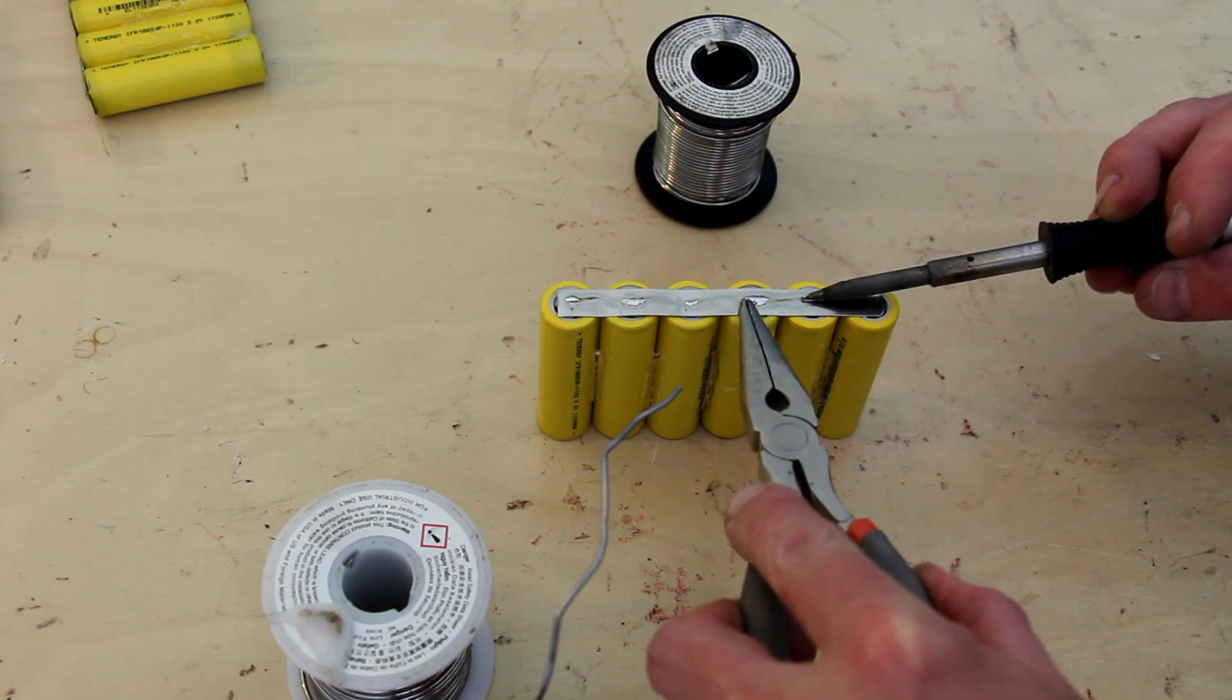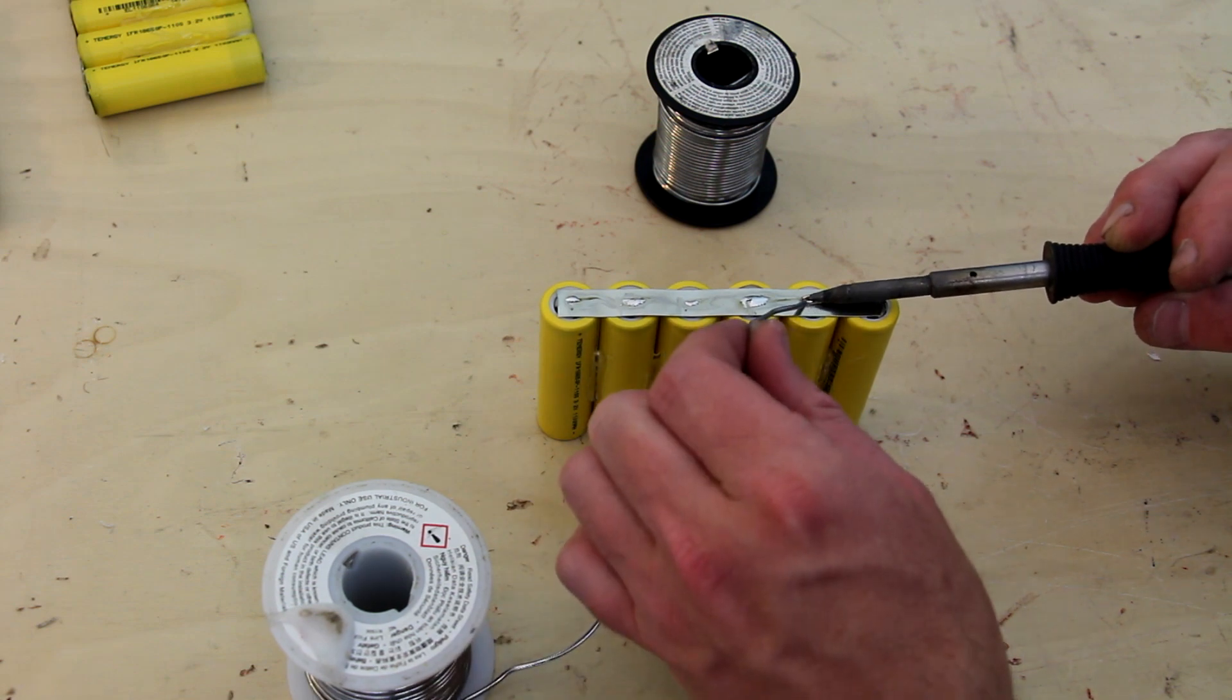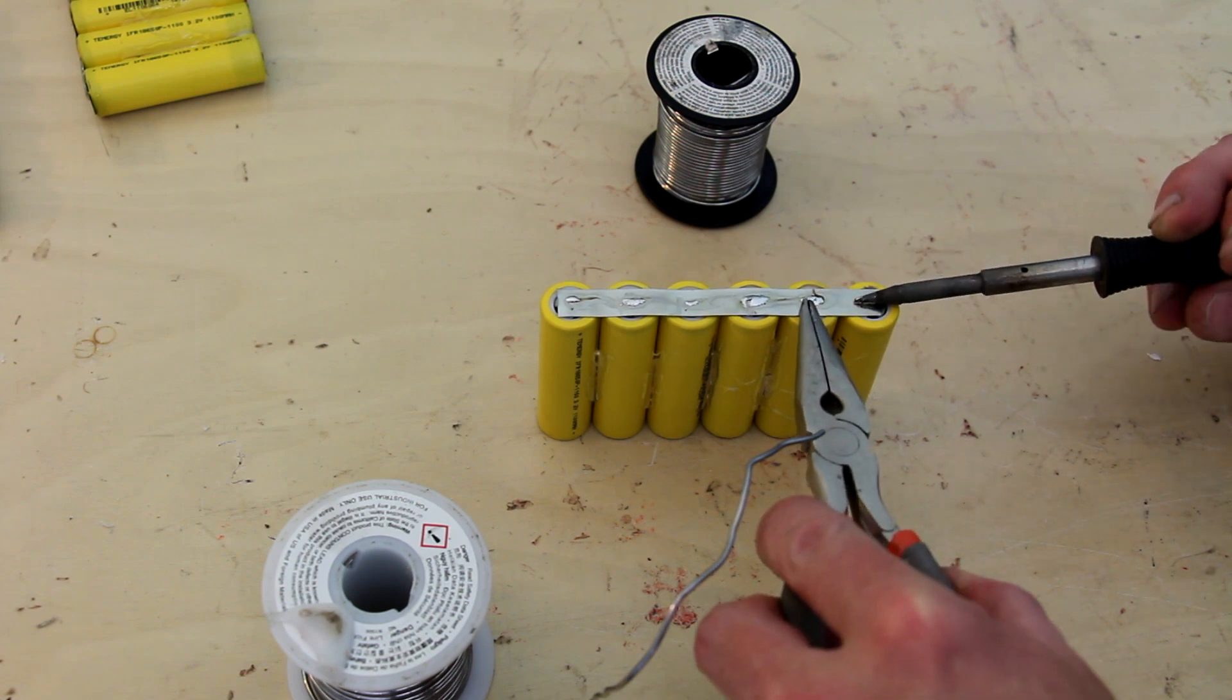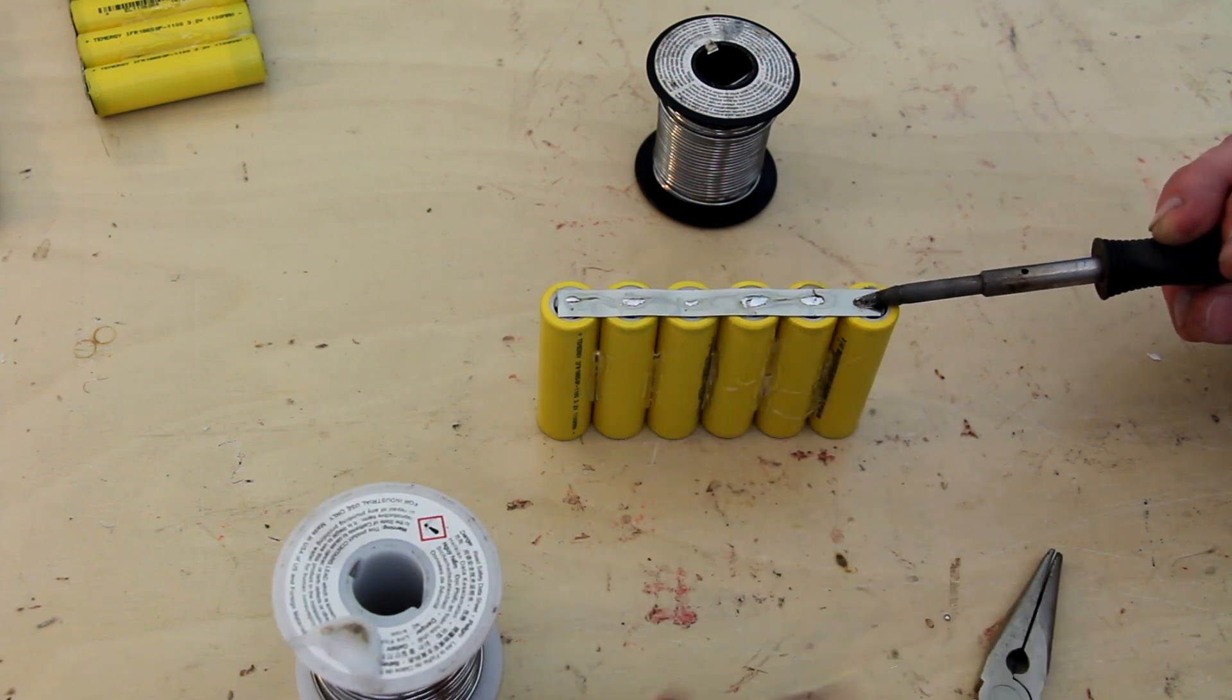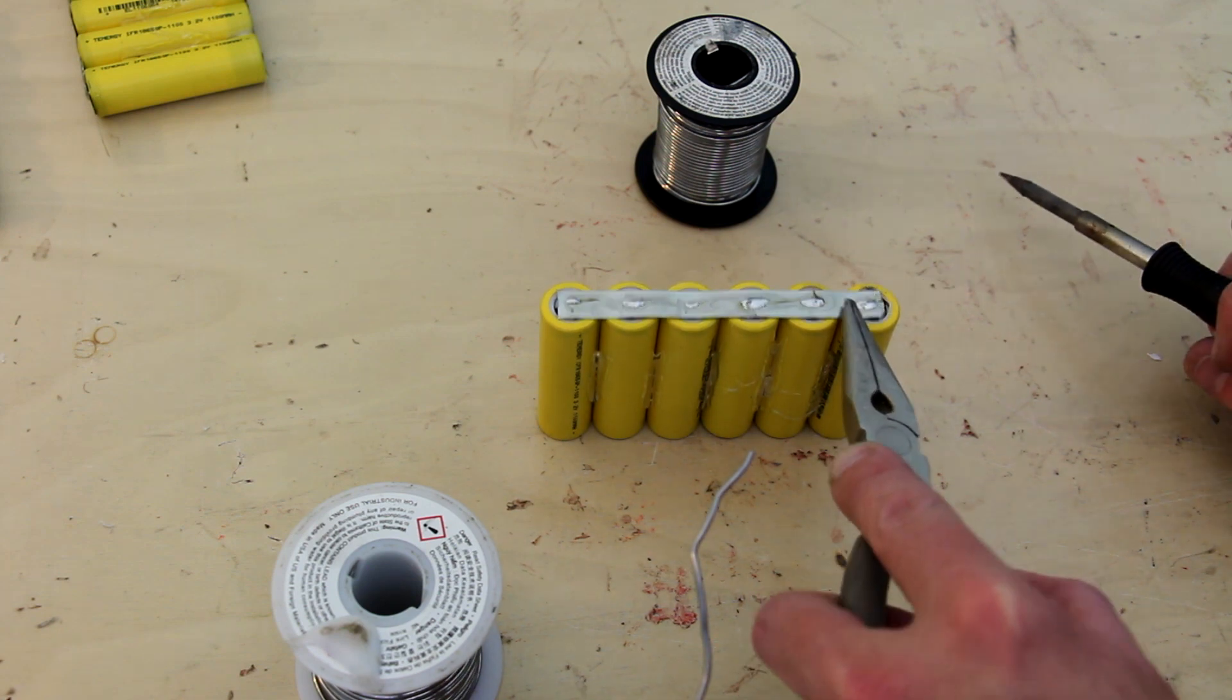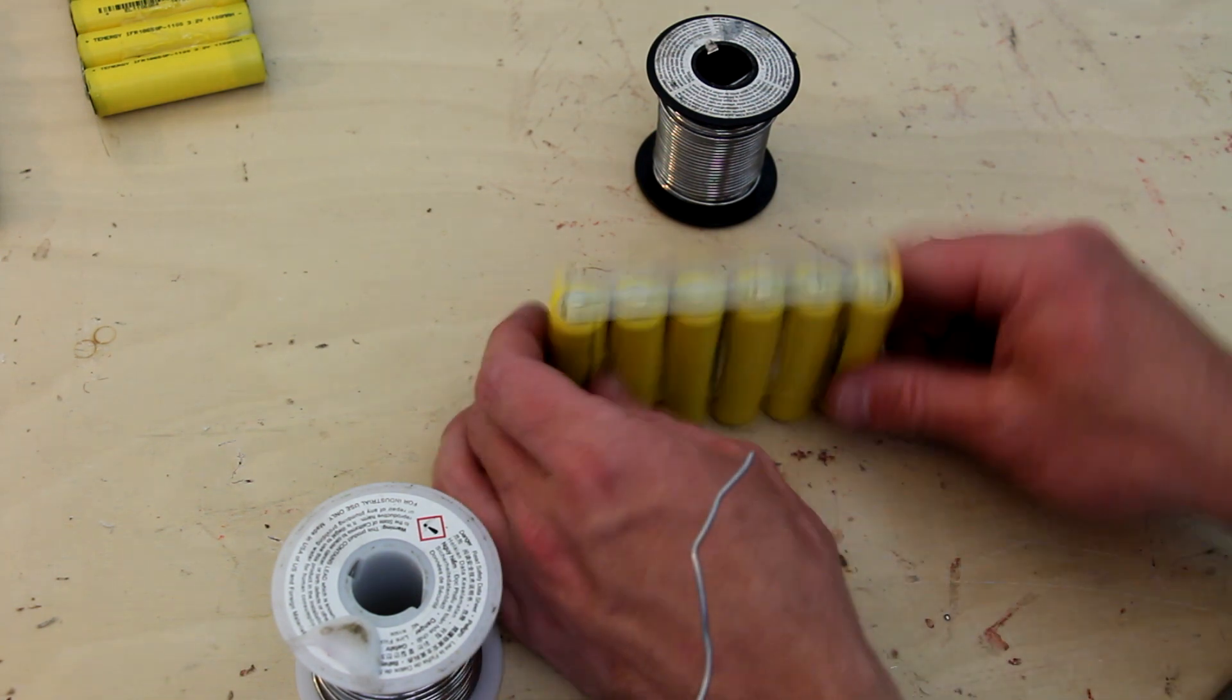You need to heat this up enough to liquefy the solder and get it to bond. However, if it takes too long you can overheat the cell and damage it. You'll note that I'm using a pair of pliers to push on each joint before moving the soldering iron. This is to make sure I retain a good connection while the solder cools.